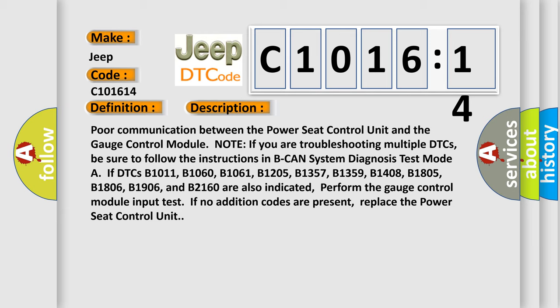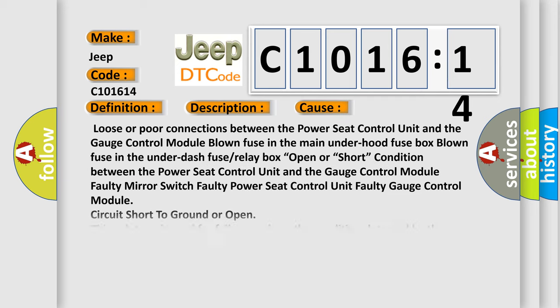B1205, B1357, B1359, B1408, B1805, B1806, B1906, and B2160 are also indicated, perform the gauge control module input test. If no additional codes are present, replace the power seat control unit.